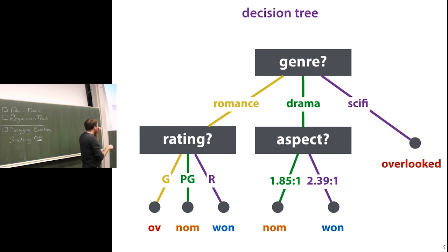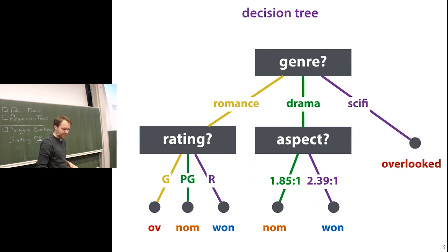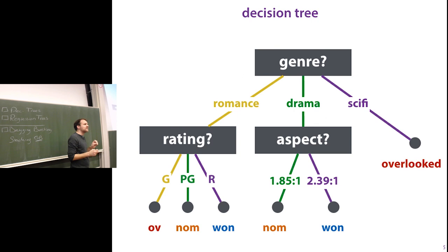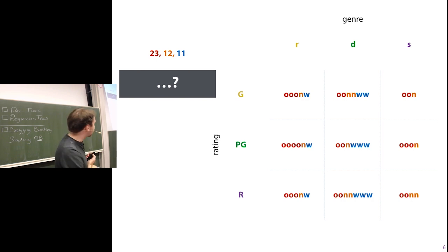These models are built by starting with an empty tree, adding a root node, and then extending every leaf by choosing a feature to split on. The biggest question is: how do we choose what feature to split on — what makes for a good split?